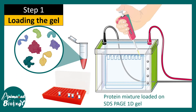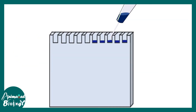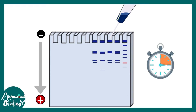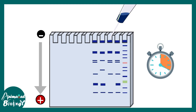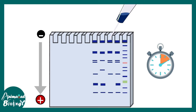The next step is to run the extracted protein mixture on an SDS-PAGE one-dimensional gel. We load the sample into the gel and then allow it to run. Proteins are separated on the basis of their molecular weight. Since we use only one parameter — molecular weight — to separate them, this is known as one-dimensional gel electrophoresis.